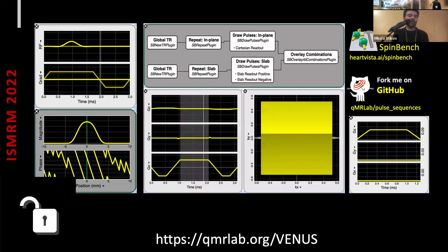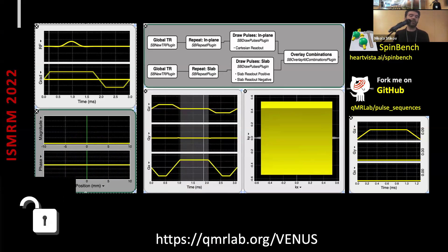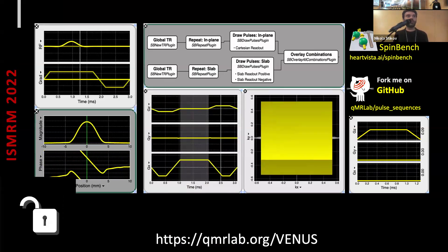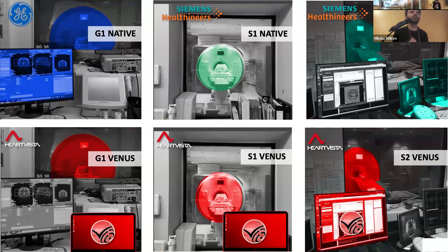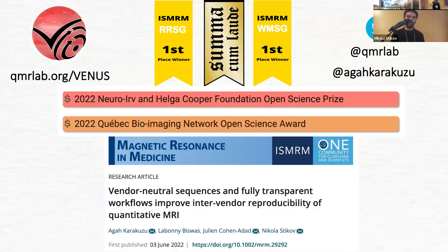Here's the sequence — it's available on GitHub. That matters because Siemens cannot change anything behind my back: I control the sequence. Even more beautifully, I can take that same sequence and deploy it on another scanner — a Siemens or a GE scanner. And that's exactly what we did, with QMR Lab running on top to make sure processing is as uniform as possible. The work is available as a NeuroLibre publication and won a lot of awards for Aga — I think it really made his career.